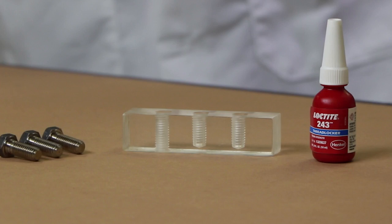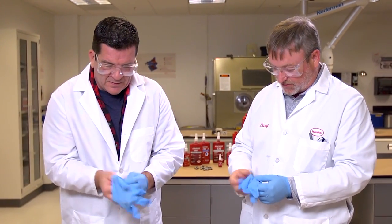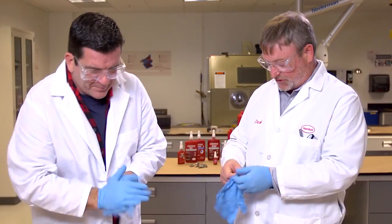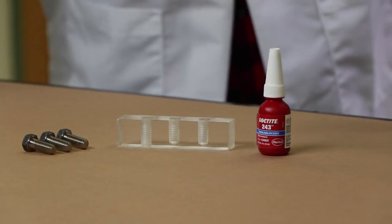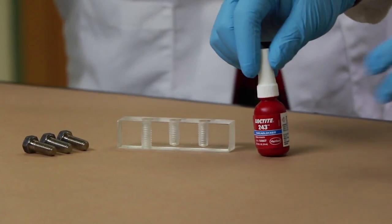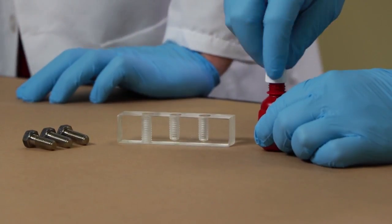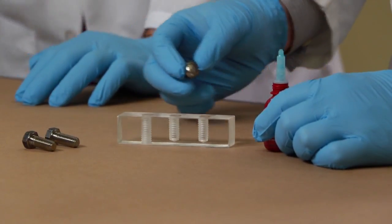So what are we going to do first? We'll do the traditional through hole technique first, just to show how easily the threadlocker will penetrate the threads after we apply it to the bolt.